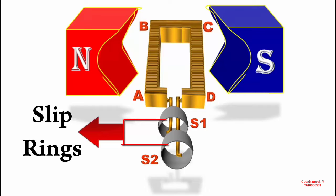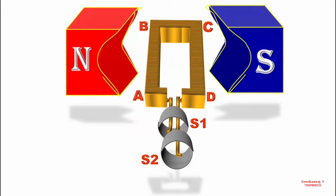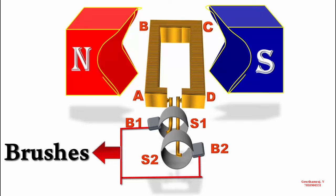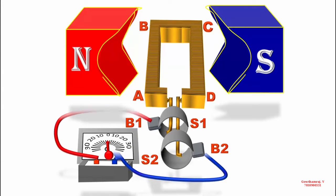Slip ring S1 is touched against carbon brush B1 and slip ring S2 is touched against carbon brush B2. The other end of each carbon brush is connected to an outer circuit. A galvanometer is connected in the outer circuit to show the deflection due to the current induced in the armature.